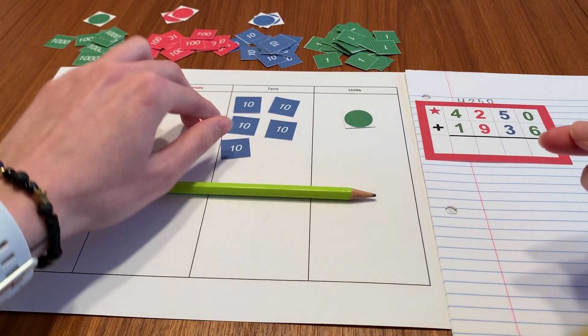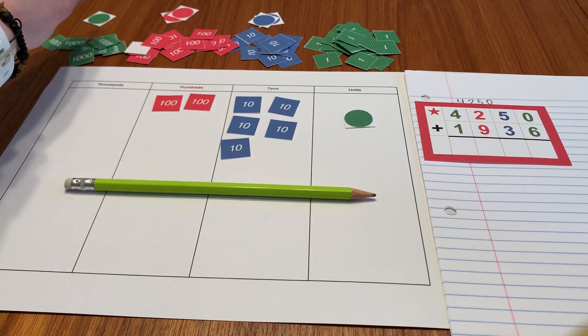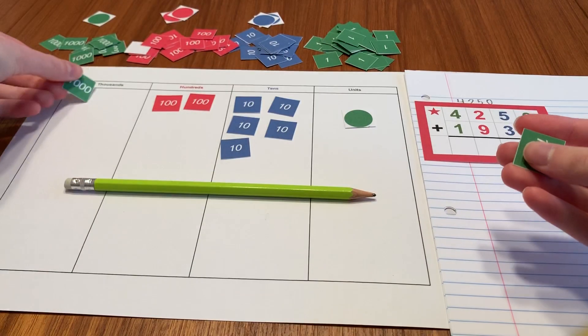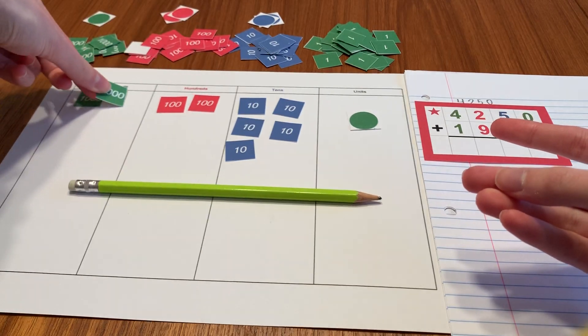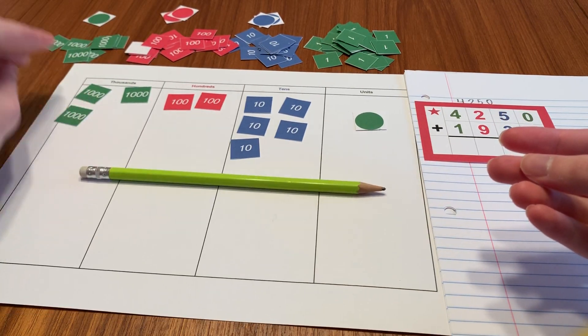And then in my thousands place, I have four thousands. One thousand, two thousand, three thousand, and four thousand.